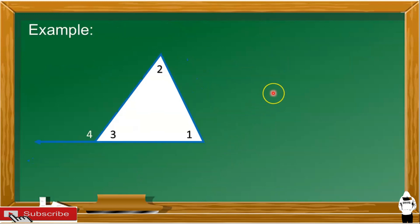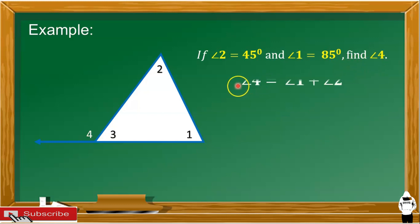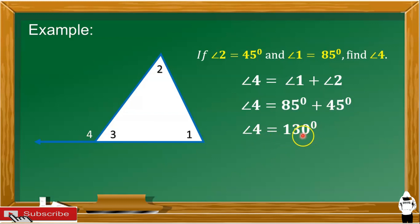Let's have an example. The sum of the two angles is equal to 130 degrees. Meaning, angle 4 is equal to 130 degrees.